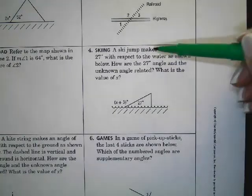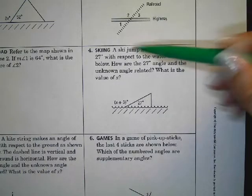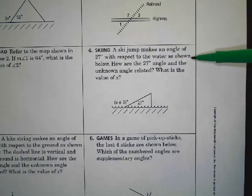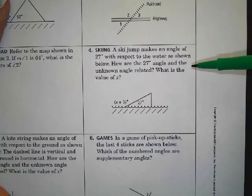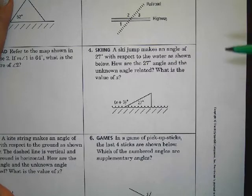The problem says a ski jump makes an angle of 27 degrees with respect to the water as shown below. How are the 27-degree angle and the unknown angle related? What is the value of x?